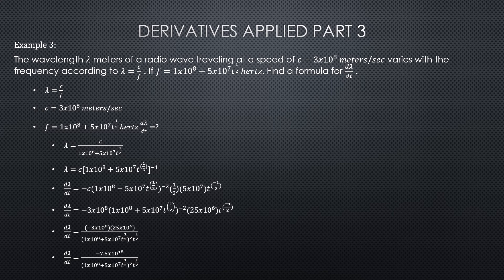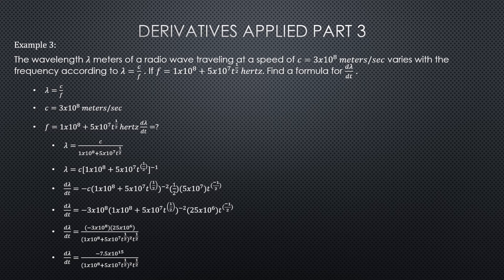So we get lambda is equal to the speed of light divided by 1 times 10⁸ plus 5 times 10⁷ t^(1/2). The next thing to do that makes things a little bit easier is just to move that whole quantity up and raise it to the negative one power.